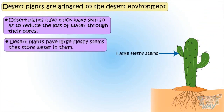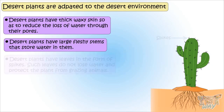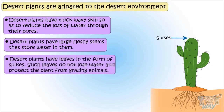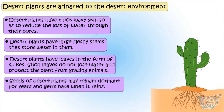Desert plants have very large fleshy stems that store water. They have leaves in the form of spikes — such leaves do not lose water through transpiration and protect the plants from grazing animals. Seeds of desert plants may remain dormant for years and germinate only when it rains.